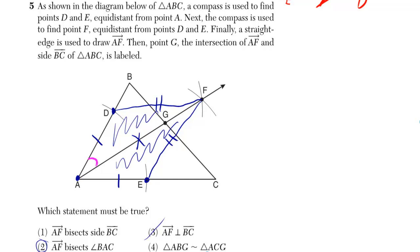Namely, that angle is equal to that angle. And if that's true, that means AF is a bisector.